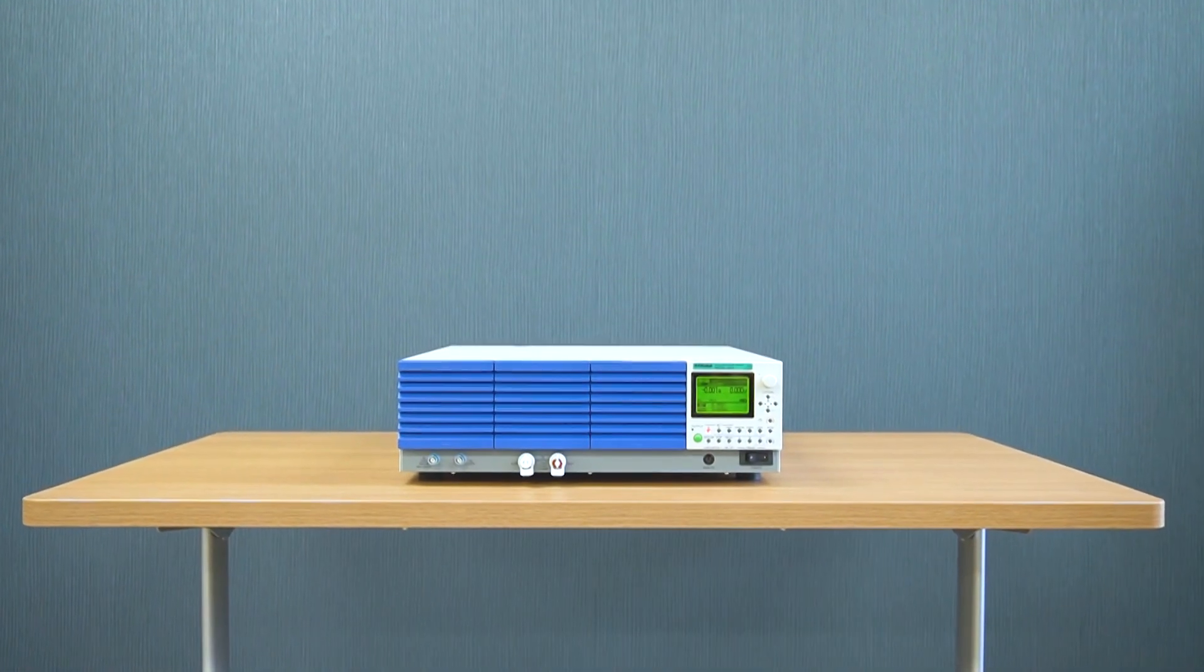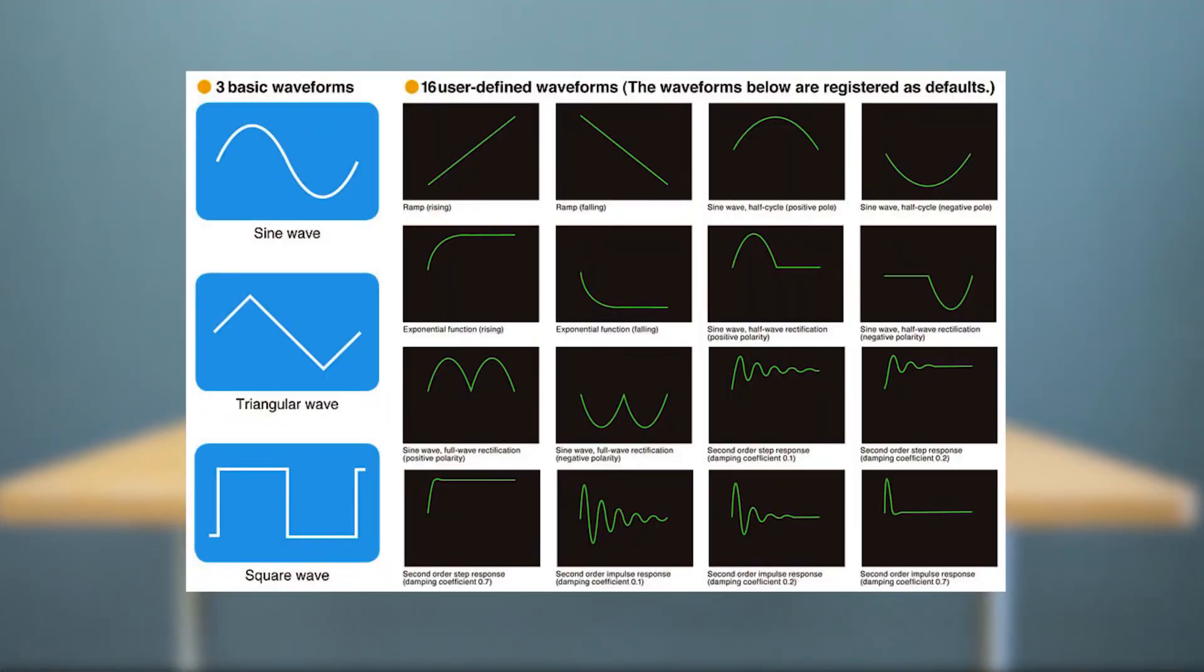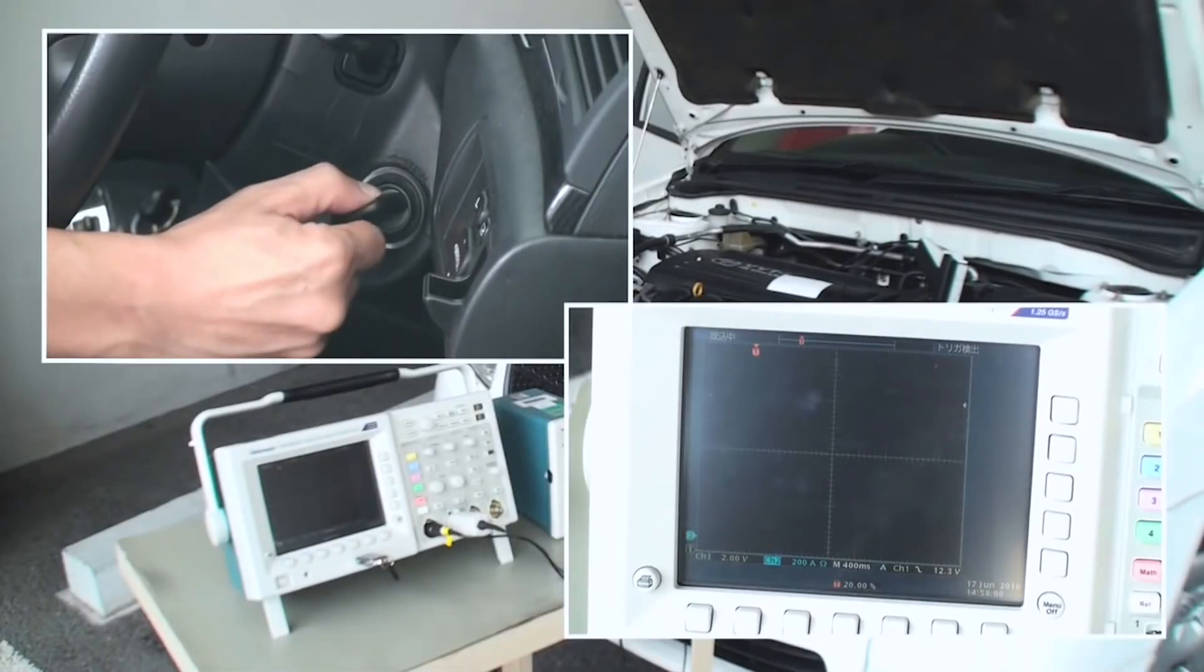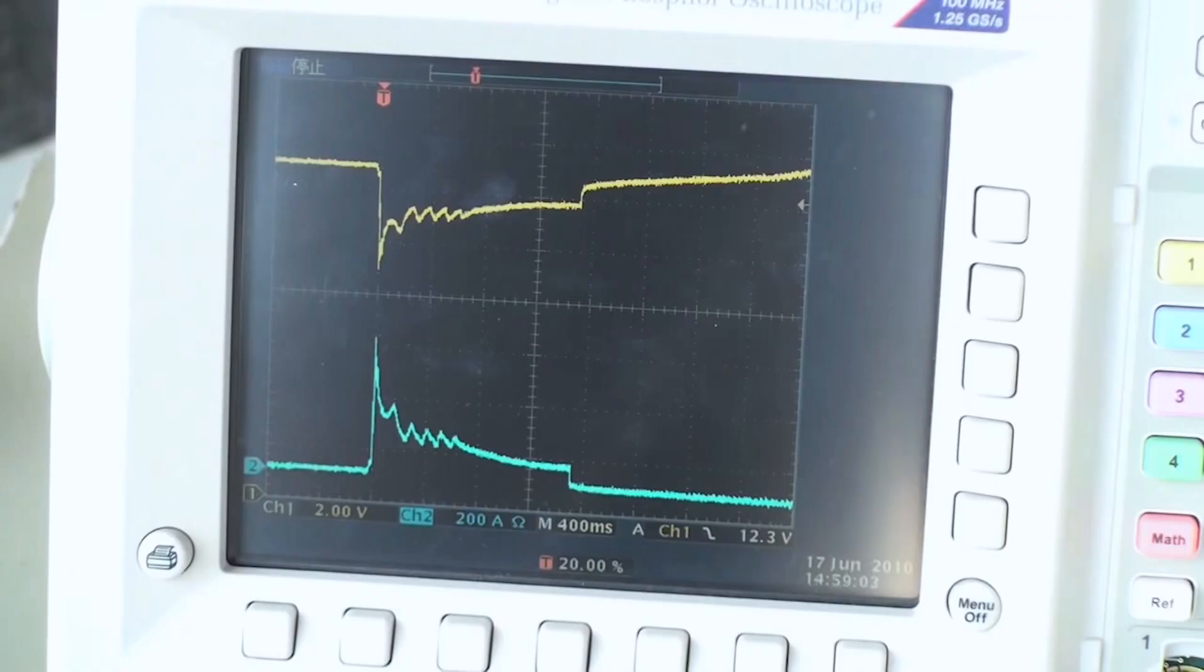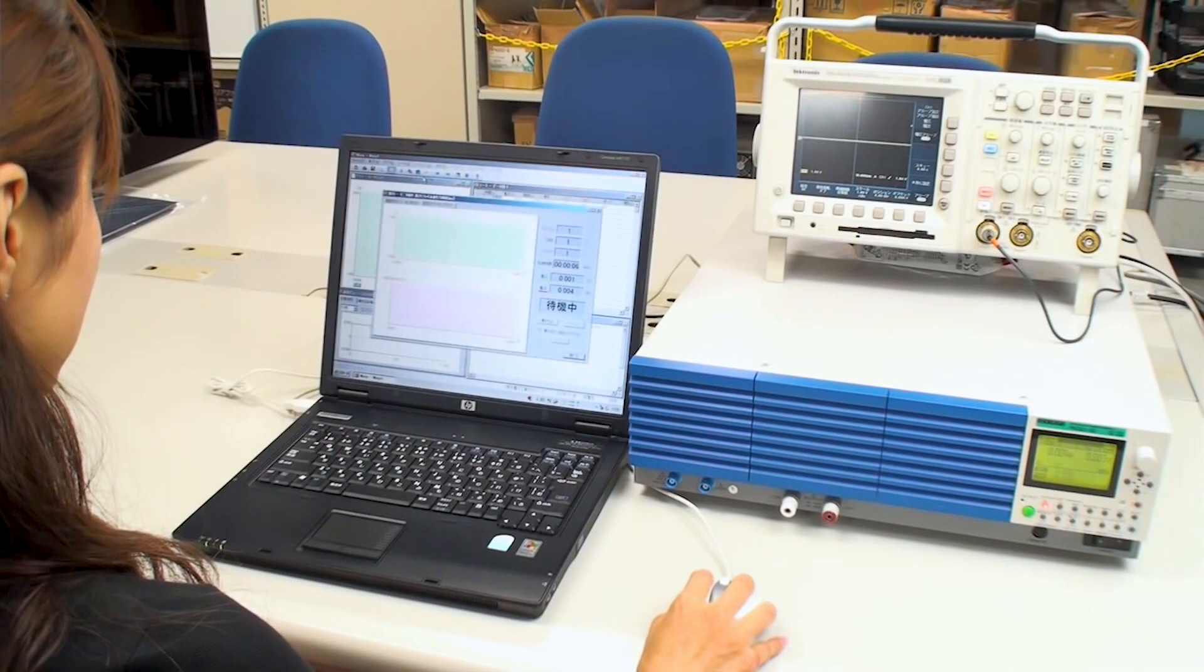In addition to being able to edit and modify the 16 user-defined waveforms built into the system's memory, the PBZ-A is also capable of downloading real-world data from an oscilloscope and replicating it as a waveform in your laboratory.